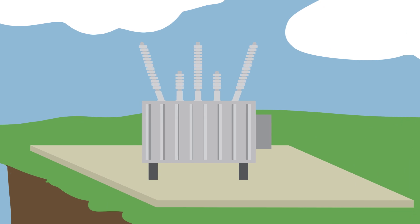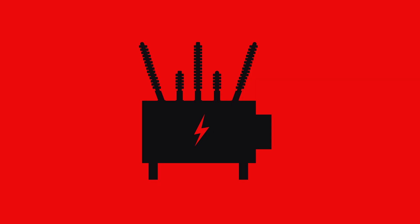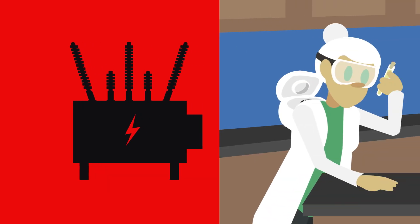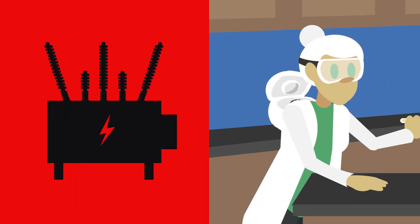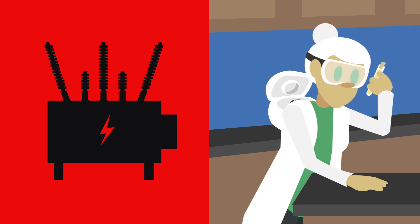When bushings are energized at line potential and operating at higher temperatures, the stresses in the bushing are increased. This makes the online monitor more sensitive and may result in cases where the online and offline values do not match.